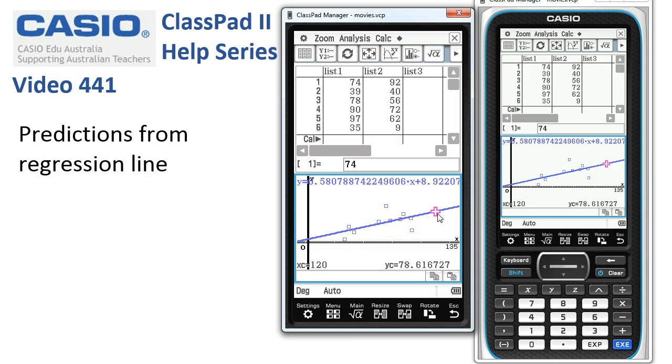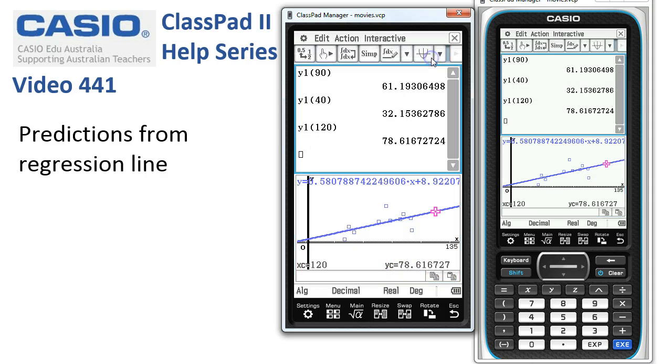And now we can get out to 120 and get the same value. Let's just check that. If I tap the square root, you can see here was our method back in main, and here was our method without leaving statistics.